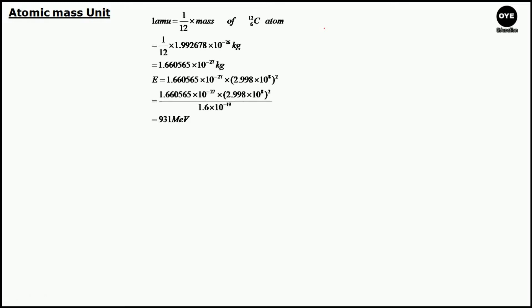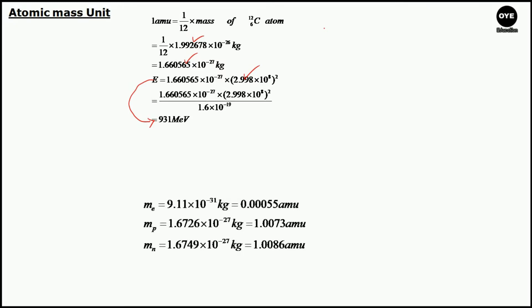Let us discuss the atomic mass unit. One atomic mass unit is defined as 1/12 the mass of a carbon-12 (⁶C¹²) atom. The mass of a ⁶C¹² atom is 1.992678 × 10⁻²⁶ kg, so after calculation, 1 amu equals 1.660565 × 10⁻²⁷ kg. We can convert this mass into equivalent energy using Einstein's mass-energy relation E equals mc². After calculation, the equivalent energy is 931 MeV. We can also express the masses of electrons, protons, and neutrons in terms of atomic mass units.